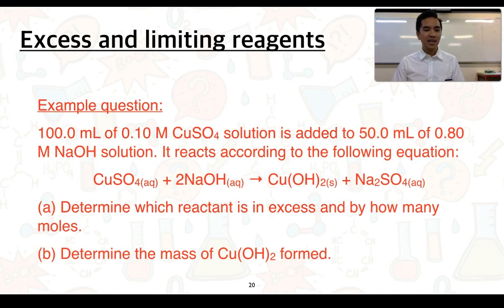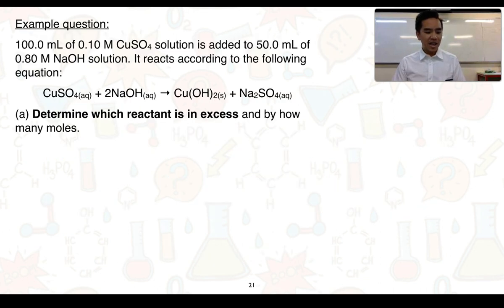I have an example question here. So it reads, 100 mL of a 0.10 molar copper sulfate solution is added to 50.0 mL of a 0.80 molar sodium hydroxide solution. It reacts according to the following equation: CuSO4(aq) + 2NaOH(aq) → Cu(OH)2(s) + Na2SO4(aq). And you can expect, in a test or an exam, to be given a balanced chemical equation for these types of questions. I have two parts to my question. The first part is to determine which reactant is in excess and by how many moles. So here's the question, and the first part, we want to determine which reactant is in excess. So let's follow those four steps as we saw previously.